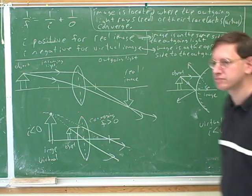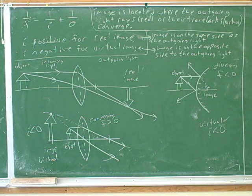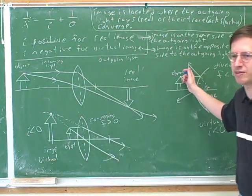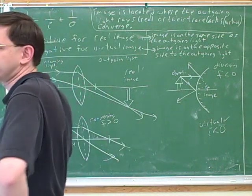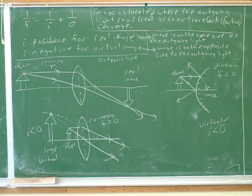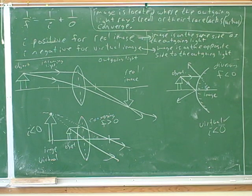These definitions are on the handout. So, the object distance is positive when the object is on the same side as the incoming light — in a normal situation, that's always the case. It can only be on the opposite side when you have multiple lenses. Focal point distance: converging means positive focal length, diverging means negative. Image distance: a real image is positive, a virtual image is negative. A real image is on the same side as the outgoing light; a virtual image is on the opposite side.